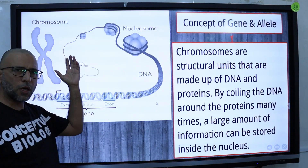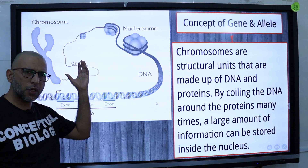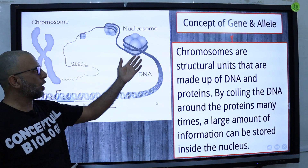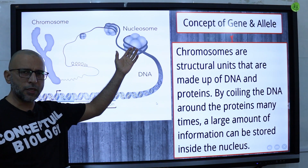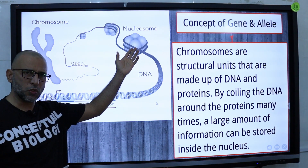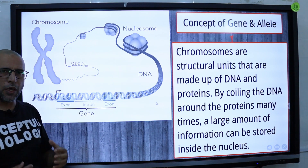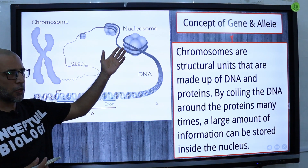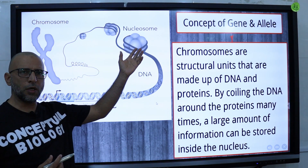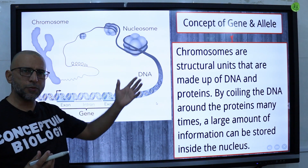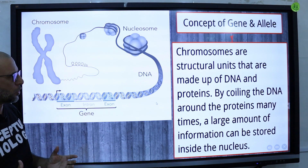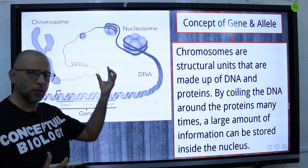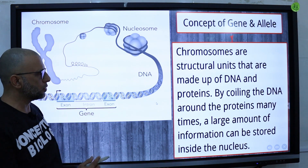Chromosomes are structural units that are made up of DNA and protein, known as histone. By coiling the DNA around the histone protein many times, a large amount of information can be stored inside the nucleus.